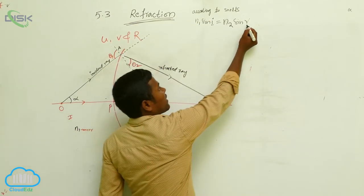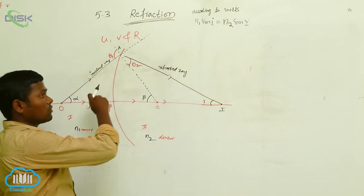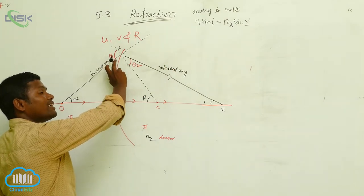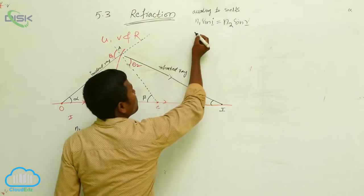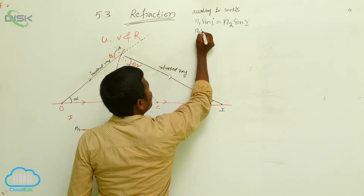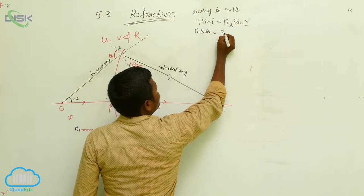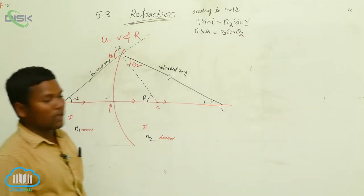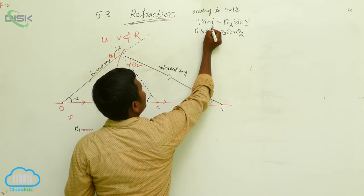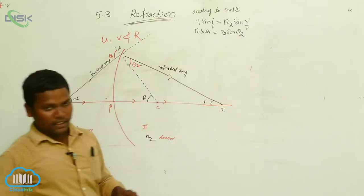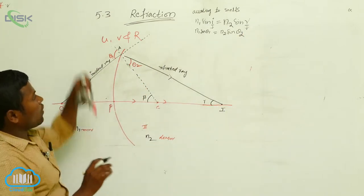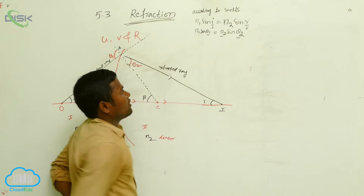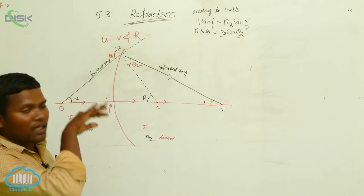Now look at the diagram. Instead of i, what is there? Theta 1 is there. So simply substituting: n1 sin θ1 = n2 sin θ2. Now I have to find n1, θ1, n2, θ2 — then we can get our relation between u and r.